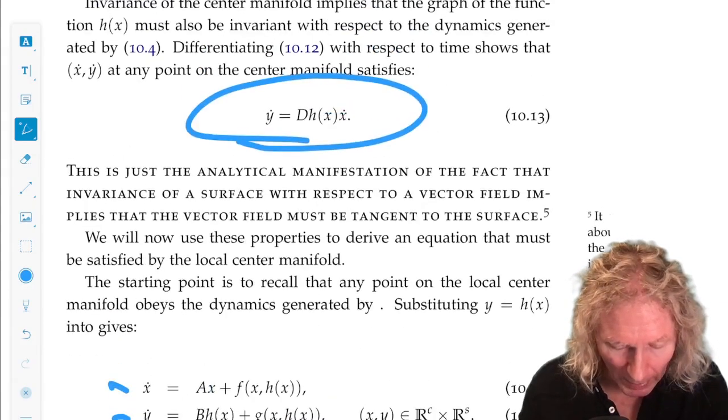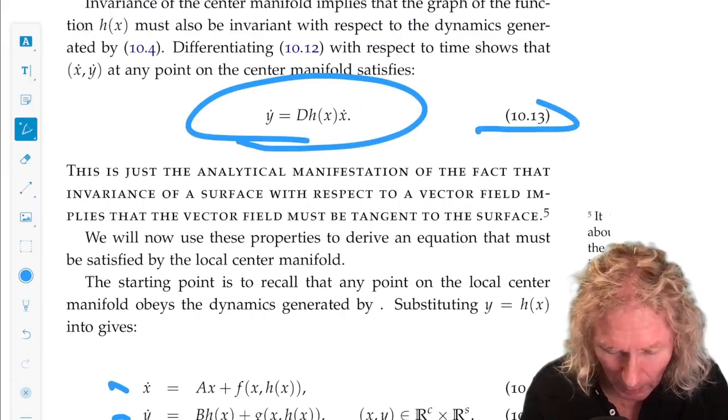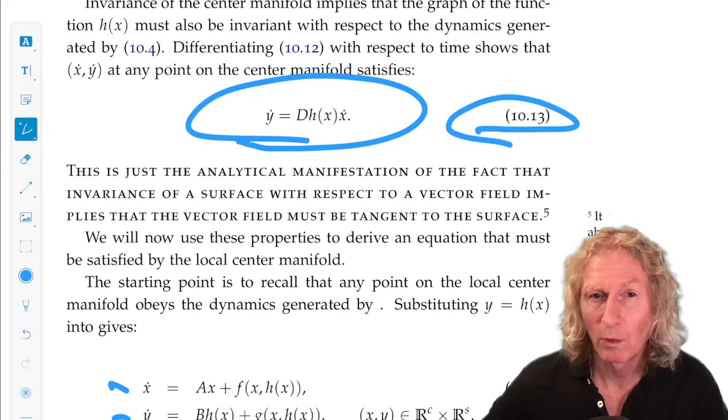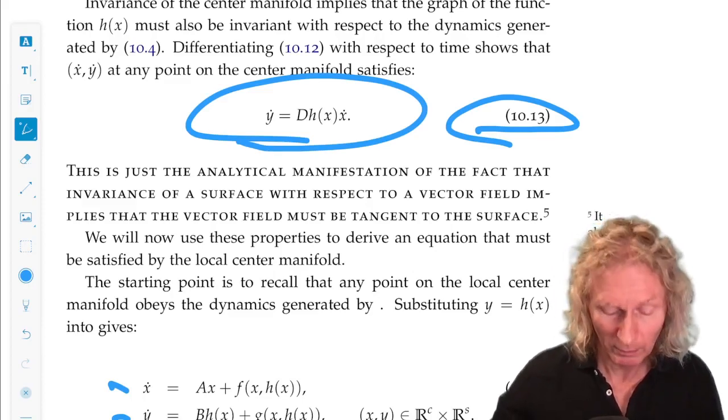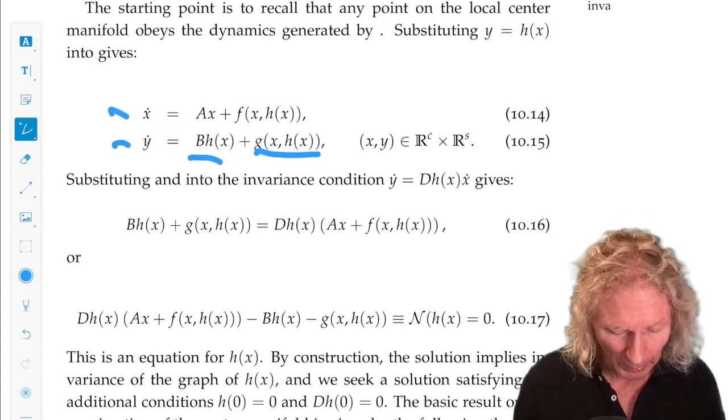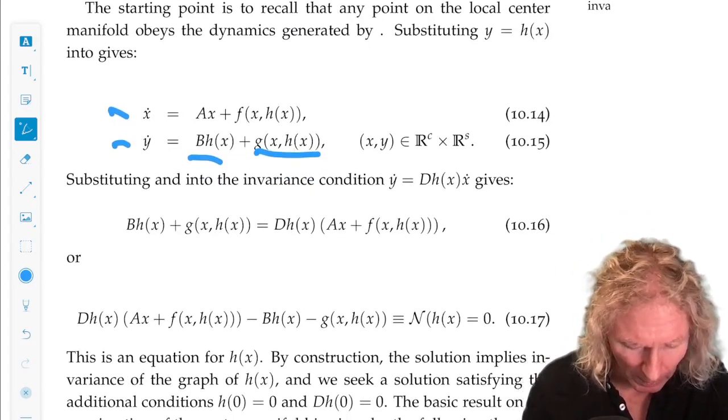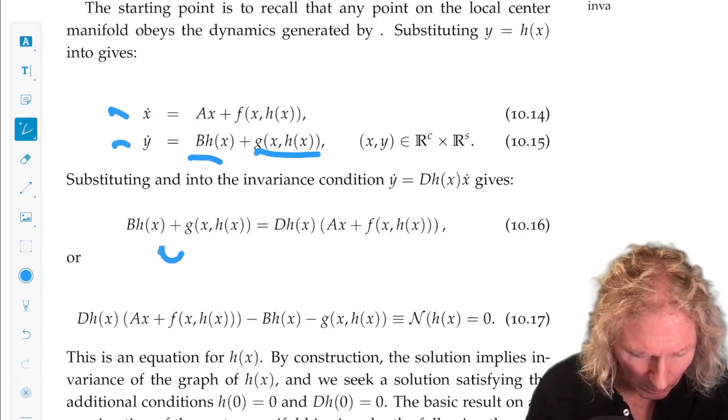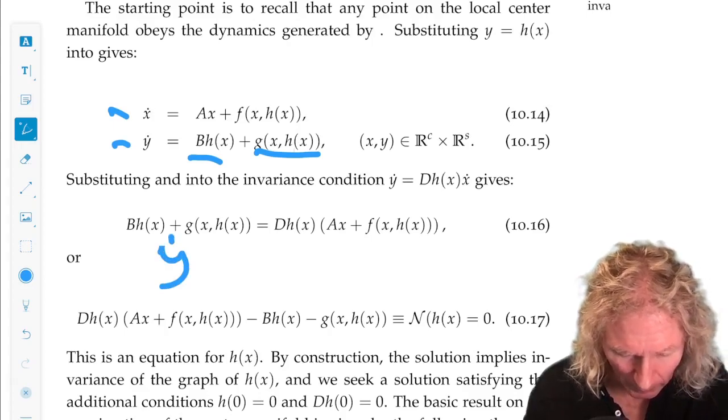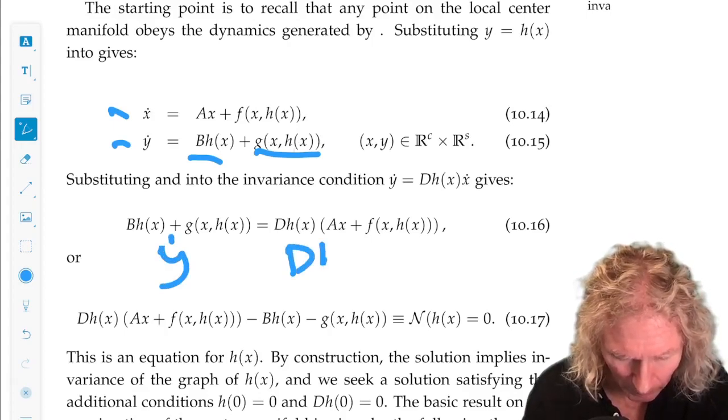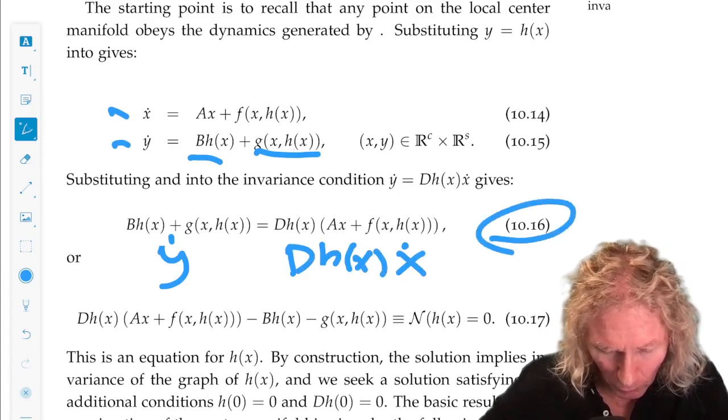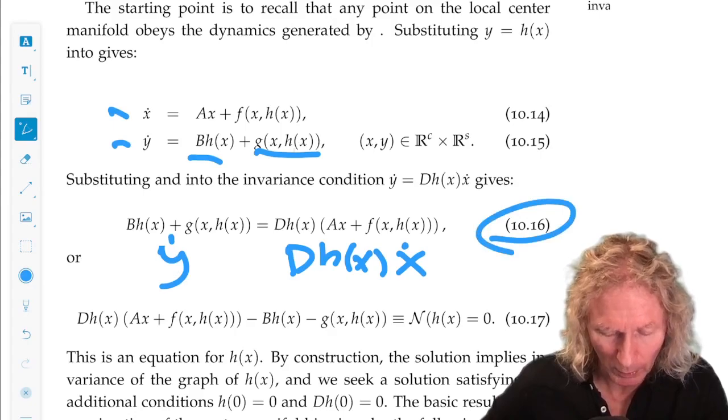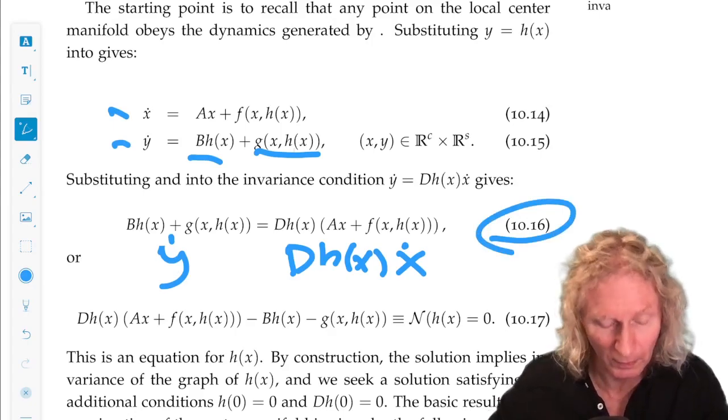But, we have this relation between x-dot and y-dot in the expression for invariance of the center manifold. So, in other words, y-dot is Dh(x) times x-dot, and that's what I've written when I've written the full vector field components for x-dot and y-dot in equation 10-16.